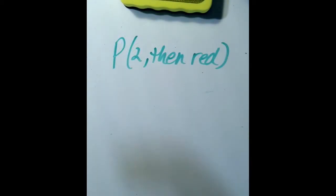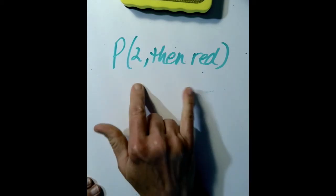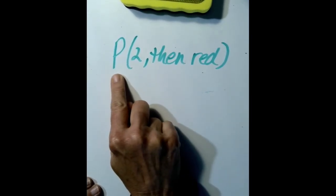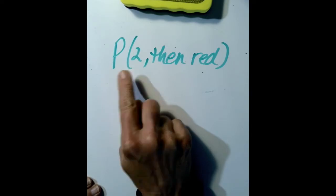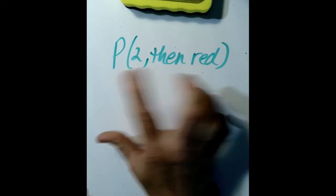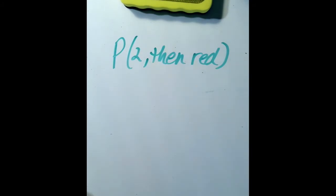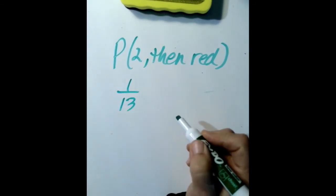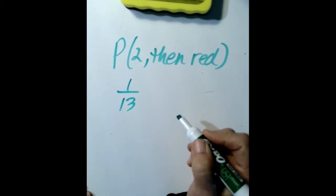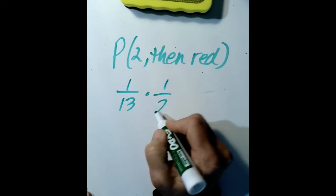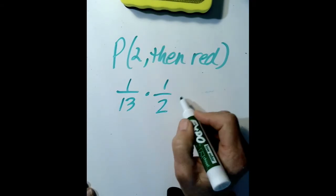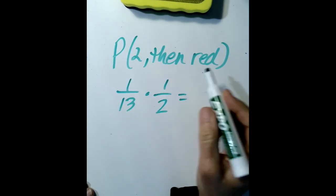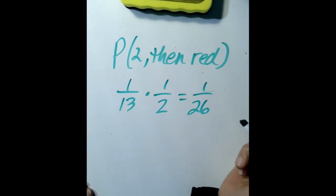Independent events are events in which the occurrence of one event does not affect the probability of the second event. For example, the probability of drawing a two and then drawing a red card are independent — we replace the card. The probability of a two is 4 out of 52, or one out of 13, and the probability of red is one out of two. The probability of both things happening together is one out of 26 — we multiply the probabilities.